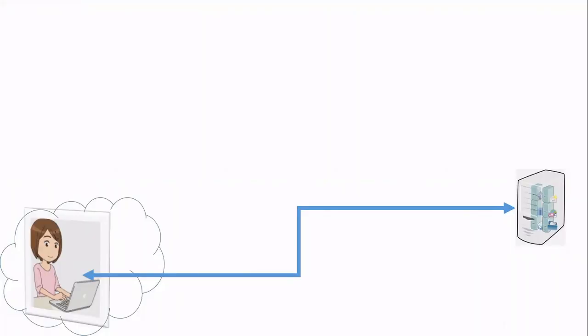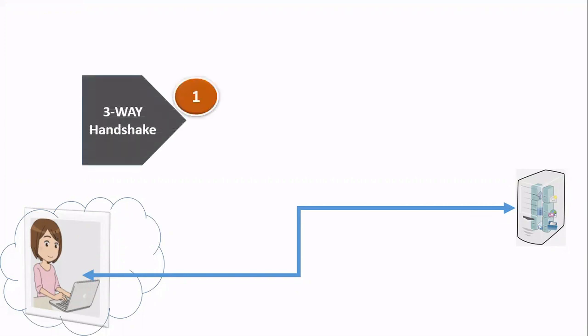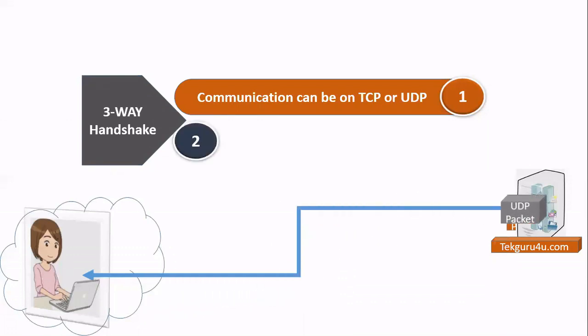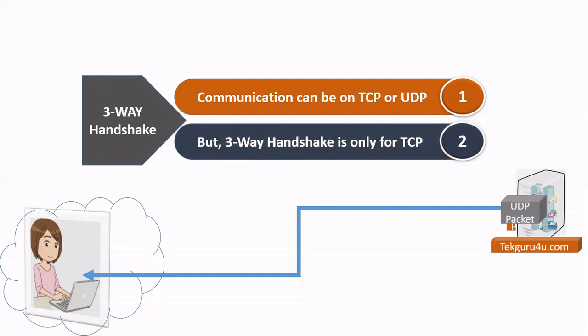I have taken a small topology where one person is trying to access one server, and we have seen how the packet is going. Communication can happen in TCP or UDP. Packets are going on TCP and UDP, but your 3-way handshake is only for TCP. If you are doing voice calls, that goes over UDP. UDP is very fast. Videos and similar things all go over UDP. But when you are doing troubleshooting, 3-way handshake is very important — and you should be aware it's only for TCP, not for UDP or other protocols.